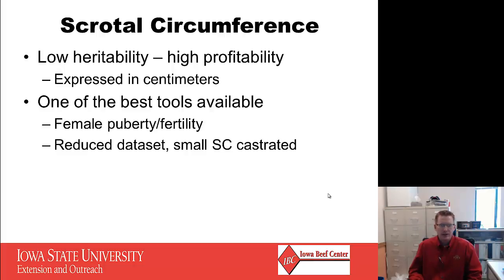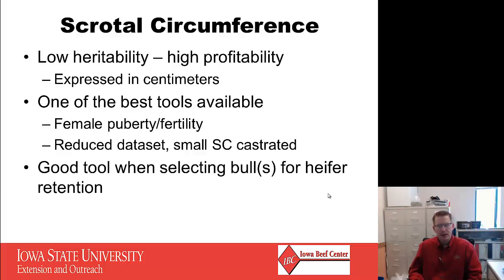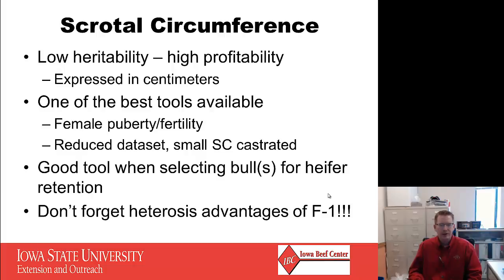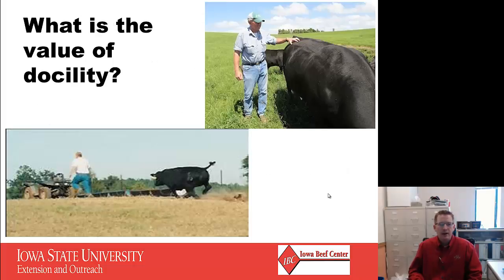One struggle with scrotal circumference is we get a reduced data set. Bulls with a small scrotal circumference at weaning or yearling are usually castrated and removed from the data set. This actually helps because removing small-scrotum bulls hopefully improves fertility on the female side. It is a good tool when selecting bulls for heifer retention, and don't forget about the heterosis advantages of the F1 — F1 females are far more fertile than a purebred individual, regardless of scrotal circumference.